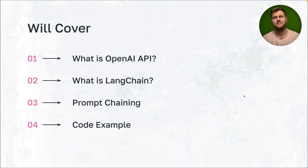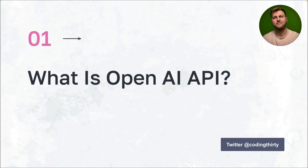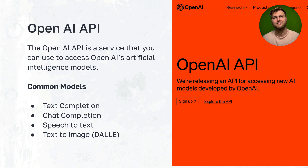Today we'll quickly go over what OpenAI API is, what LangChain is if you're new to it, what prompt chaining is, and then we're going to look at the code. So what is OpenAI? If you're familiar with ChatGPT, you know what OpenAI is. They allow you to use their API to access a bunch of their AI models, including text completion, chat completion, speech to text, and text to image.